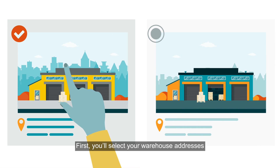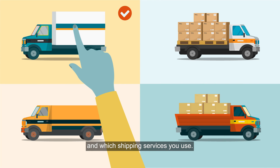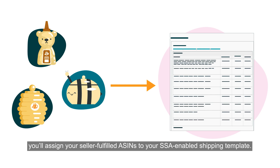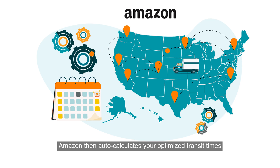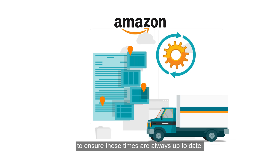First, you'll select your warehouse addresses and which shipping services you use. Then you'll assign your seller-fulfilled ASINs to your SSA-enabled shipping template. Amazon then auto-calculates your optimized transit times and continues to refresh carrier data to ensure these times are always up to date.